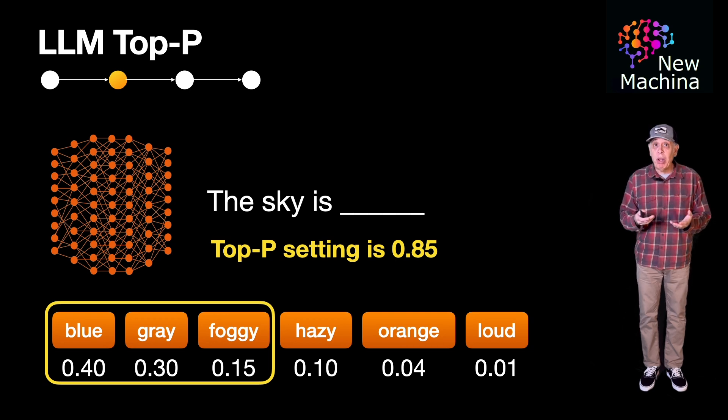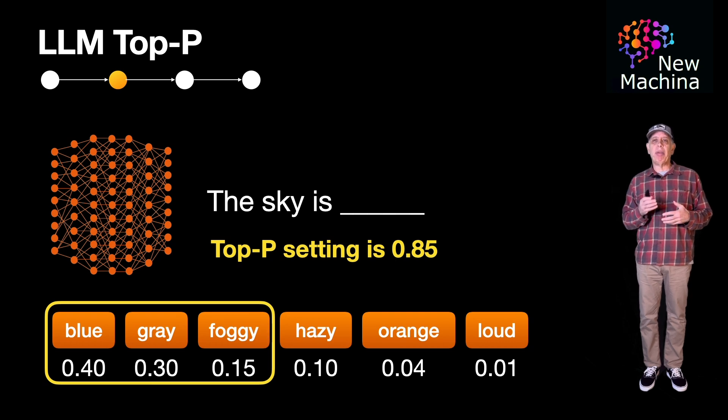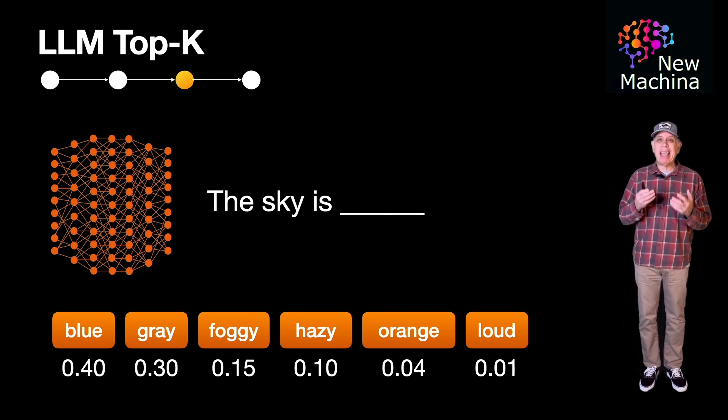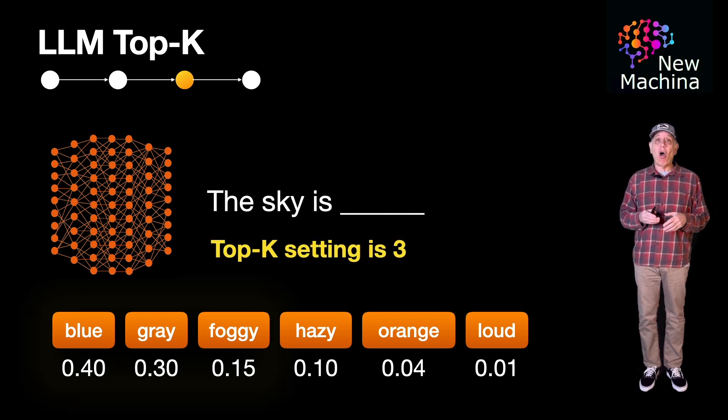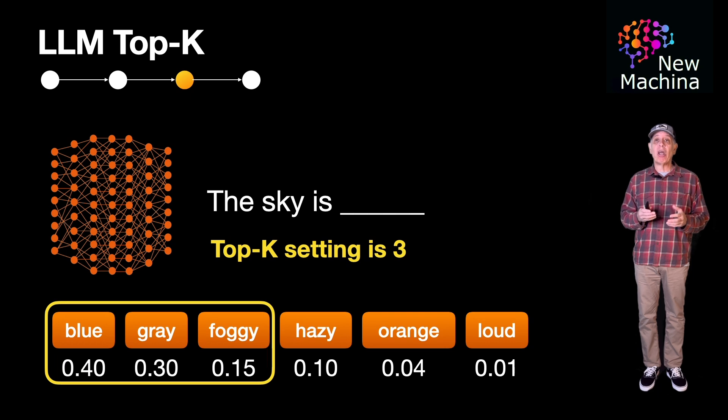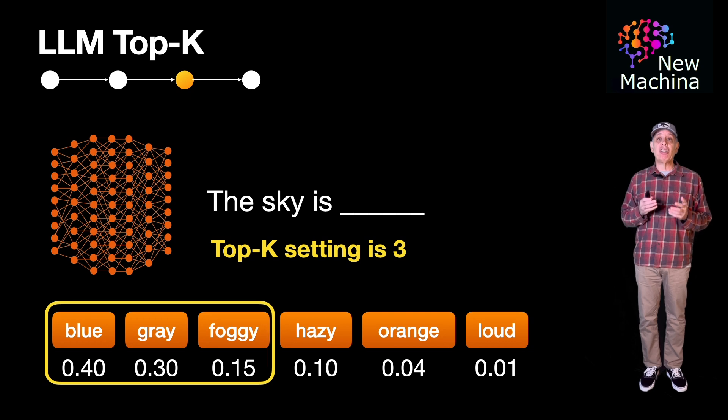So now that you understand Top-P, what is the Top-K setting? Well, like Top-P, Top-K also controls the candidate words from which the next word can be sampled, but it does it in a different way. Looking back at our example, Top-K considers a fixed number of the most likely words.